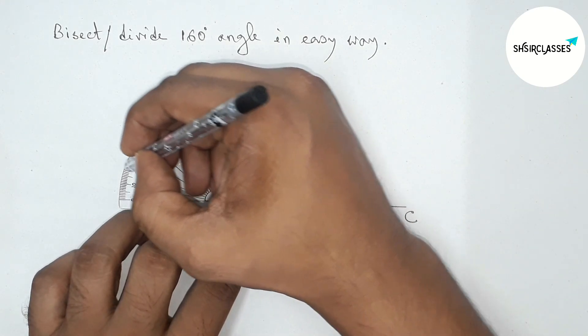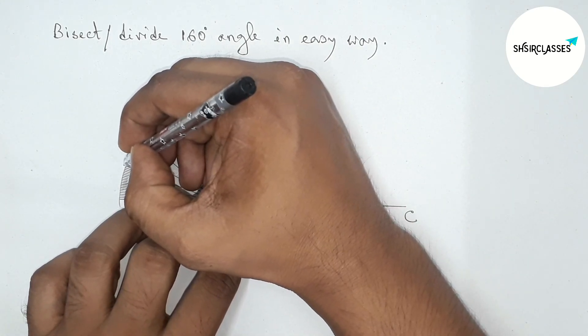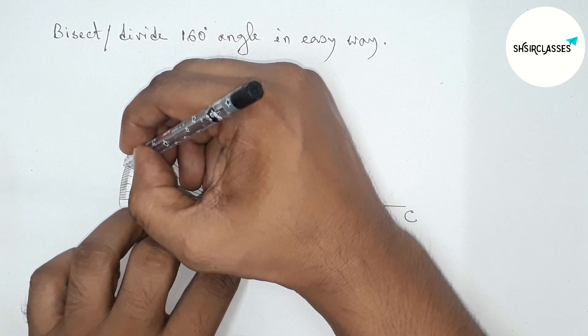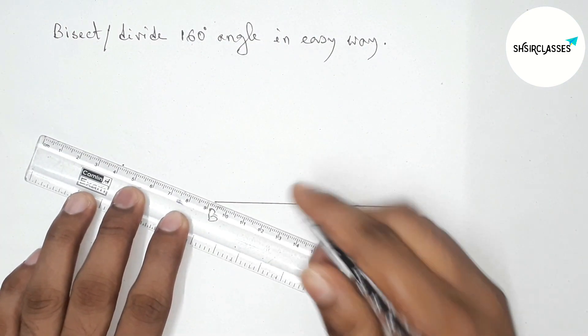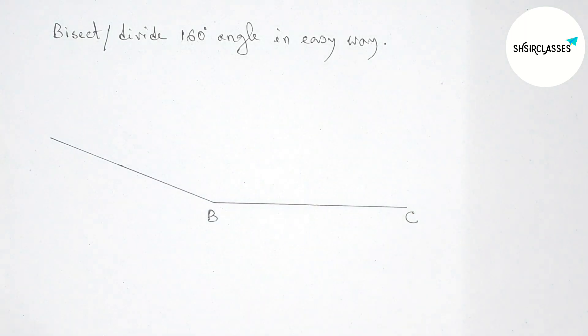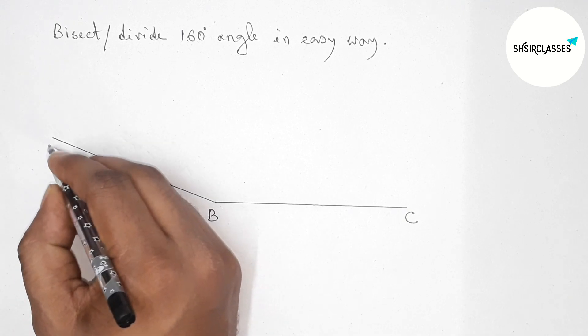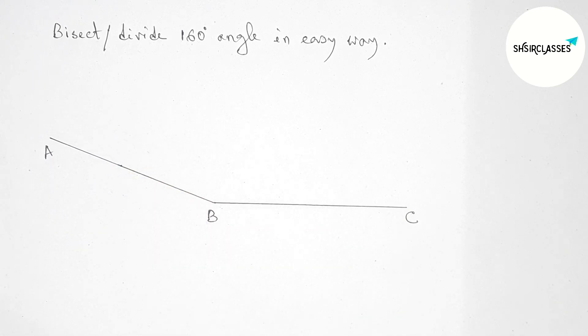So this is 160 degrees. First marking here 160 degree angle by this way, okay. Next, joining this line. So now taking here point A. So angle ABC, this is 160 degrees. Now bisecting the angle ABC.